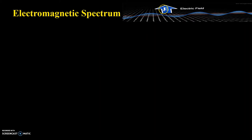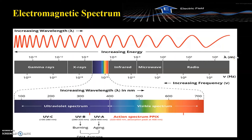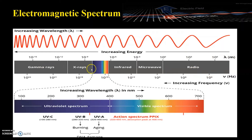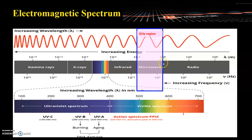Let us discuss about the electromagnetic spectrum. An electromagnetic wave has both the electric field and the magnetic field perpendicular to the direction of propagation. The electromagnetic spectrum includes radio waves, microwaves, infrared, visible, X-rays, and gamma rays. From left to right, the wavelength is increasing; from right to left, the frequency and energy are increasing. We are confined to the microwave frequency region, that is the gigahertz region, where the wavelength is in terms of centimeters to millimeters.